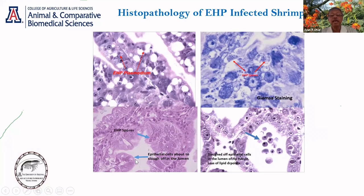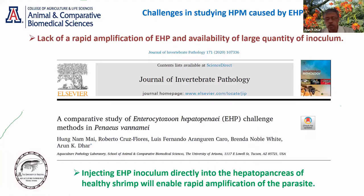Upon infection, these epithelial cells are just about to slough off, and in later stages you see sloughed-up cells containing plasmodium with GIMS stain that targets fungal elements. And you can see the spores. If you look in a very objective manner, what are the challenges regarding EHP?